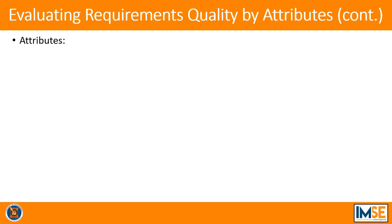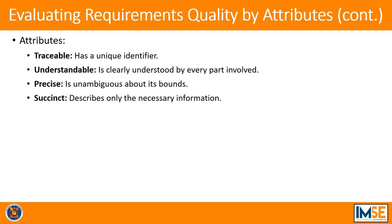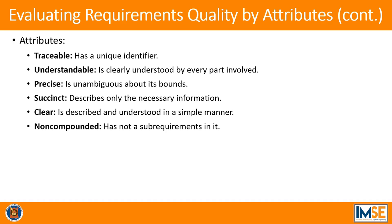The second method is evaluating requirements quality by attributes. It analyzes the quality characteristics of each requirement and helps determine if requirements clearly state what actions must be carried out under specific conditions. A quality requirement must possess attributes such as being traceable — having a unique identifier — understandable, precise, and concise, meaning it describes only necessary information. It must be clear, uncompounded — not containing sub-requirements — and correct, reflecting the true wishes of the customer.